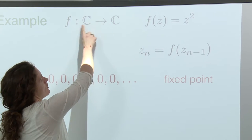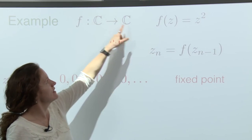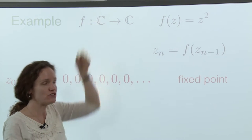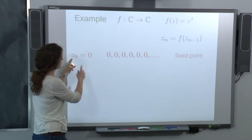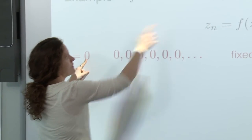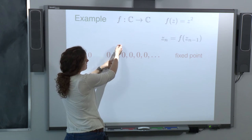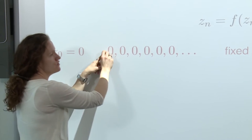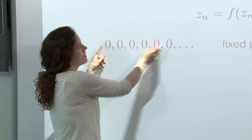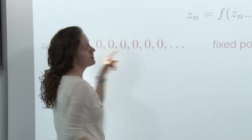This process generates a sequence of numbers. For instance, if the starting point z₀ is 0, plugging it into the function gives 0 squared, which is 0. Feeding that output back gives 0 again. So this generates a sequence — a little boring, just a sequence of zeros. The point 0 is left fixed or unchanged by this function; it's called a fixed point.